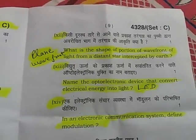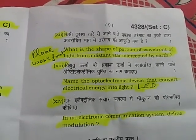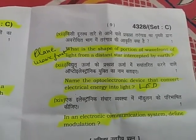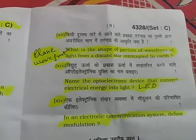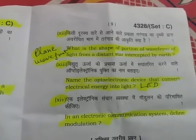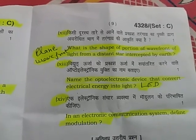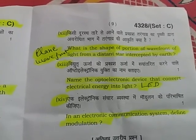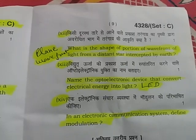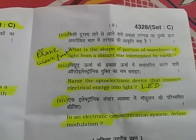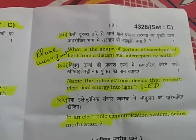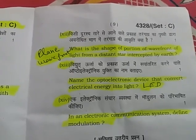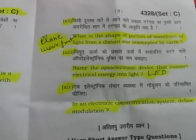Twelfth part: What is the shape of the portion of a wavefront of light from a distant star intercepted by the Earth? The answer is a plane wavefront.